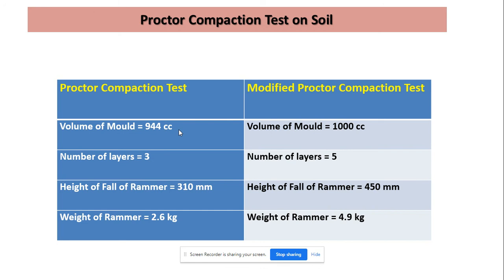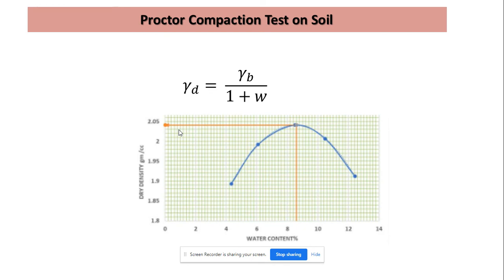The number of layers in which the soil is compacted is three in the standard Proctor compaction test, while in the modified Proctor compaction test the number of layers is five. The height of fall of the rammer is around 450 mm in the modified Proctor compaction test compared to 310 mm in the standard test. The weight of the rammer is 2.6 kg in the standard Proctor test and 4.9 kg in the modified test. Overall, the compactive effort — considering the rammer weight, height of fall, and number of layers — has been increased in the modified Proctor compaction test, so better compaction is possible.